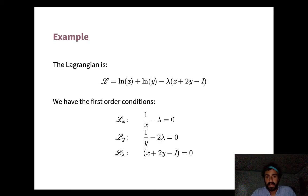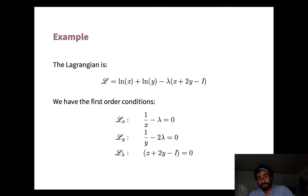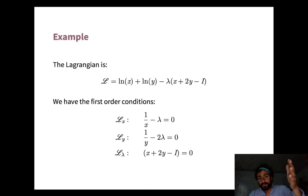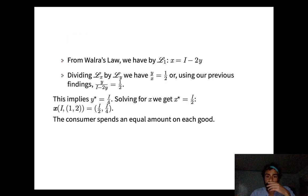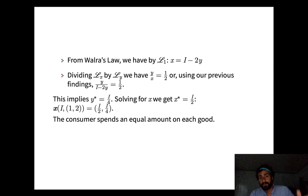From Walras's Law we have x = I − 2y. Dividing the first-order condition for x by the one for y, the lambdas cancel and we get y/x = 1/2. Plugging x = I − 2y and y = x/2 back in: y/(I − 2y) = 1/2. Solving this gives y* = I/4.